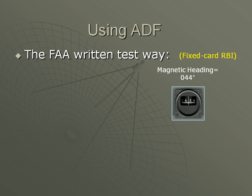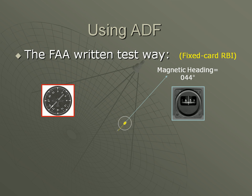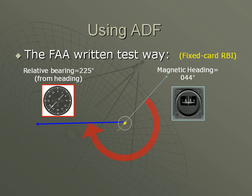During a written test, you'll have scratch paper to draw it out. Next, we need to check our ADF. The needle is pointing to the aft left quarter, or 225 degrees from the nose. In other words, the relative bearing to the station is 225. So we already have a general idea of the direction, or bearing, to the station. To find the exact bearing, we can use the formula.